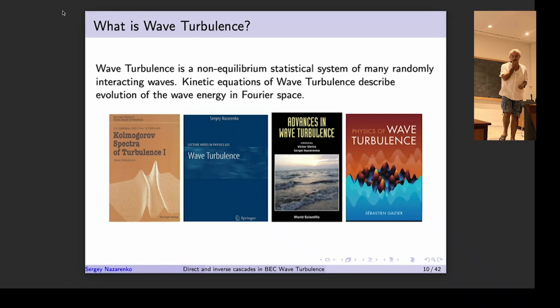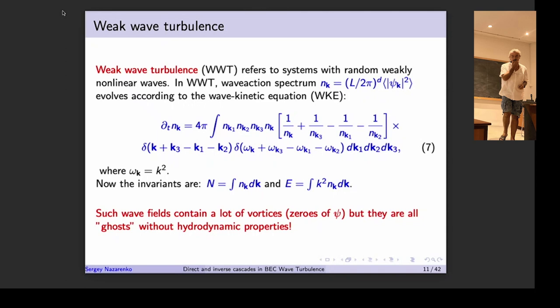There are a number of texts on wave turbulence now — classical older texts by Zakharov et al., followed by mine, and then reviews both theoretical and experimental, and more recently a physics-oriented text by Sébastien Gaultier. I won't go into details of what's written in these books; I'll just give you the key outcomes. The fundamental object in wave turbulence is the wave spectrum: I go to Fourier space, Fourier transform my complex field ψ, and normalize it appropriately.